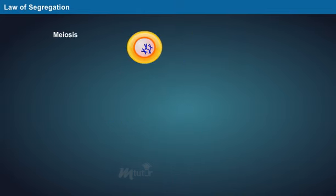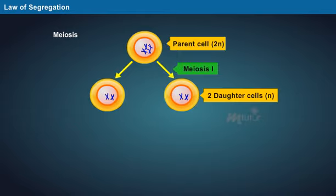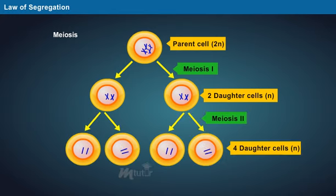After the discovery of meiosis process, the law of segregation was stated as: During reproduction, the inherited alleles that determine the traits are separated into the reproductive cells by a process called meiosis and randomly reunite during fertilization.